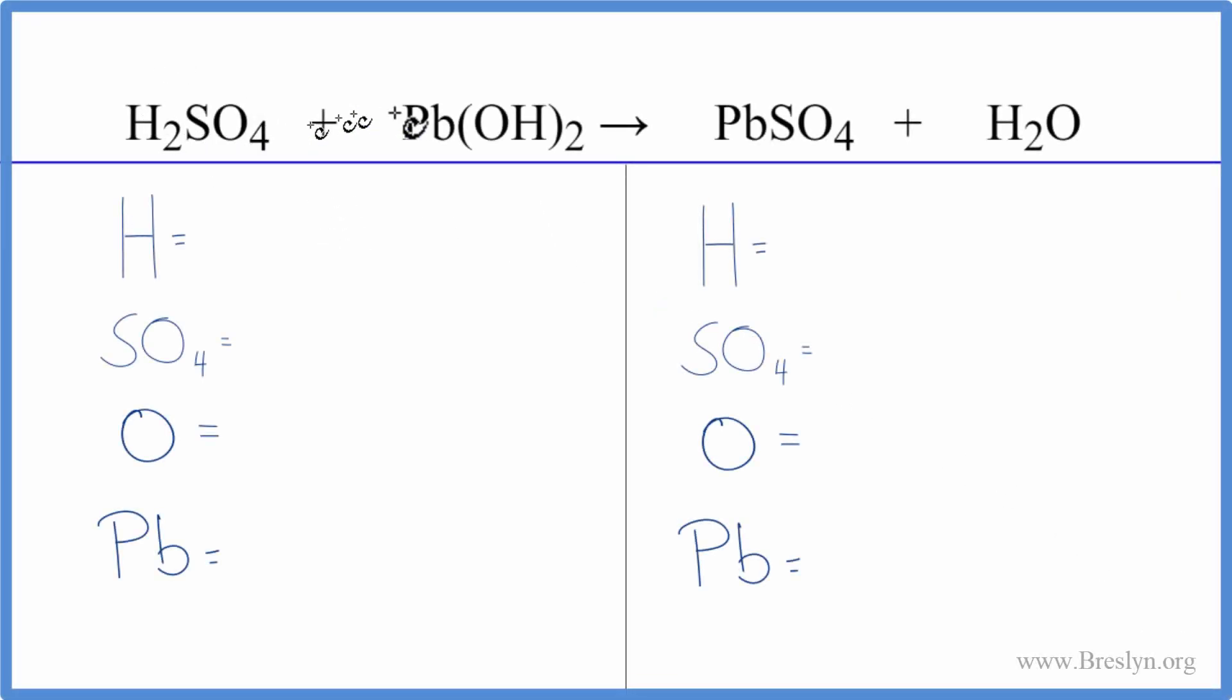In this equation, we have sulfuric acid plus lead 2 hydroxide. So we have an acid and a base. This is a neutralization reaction.